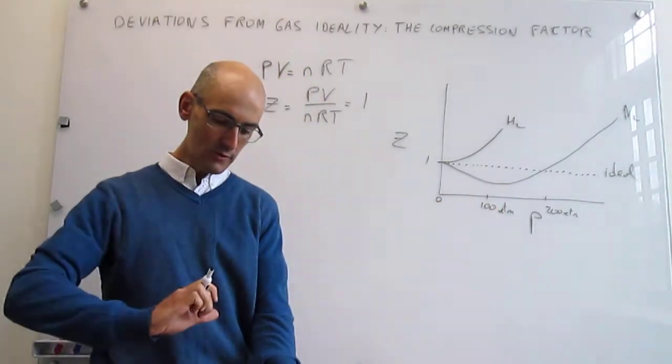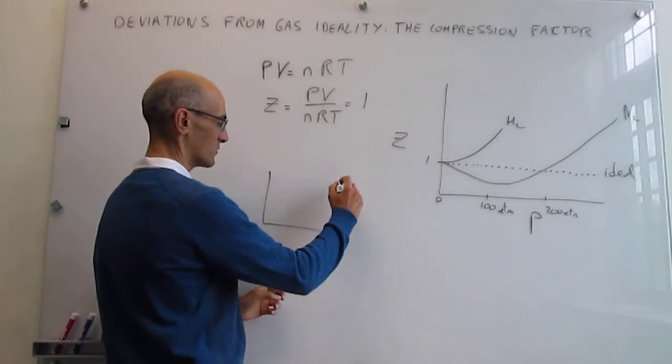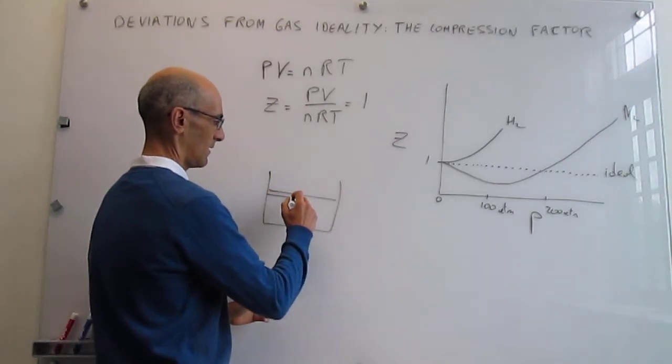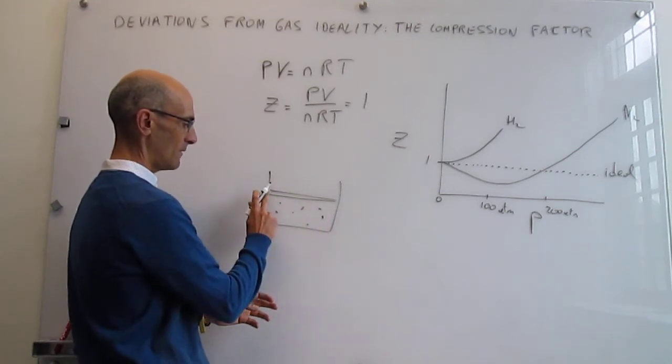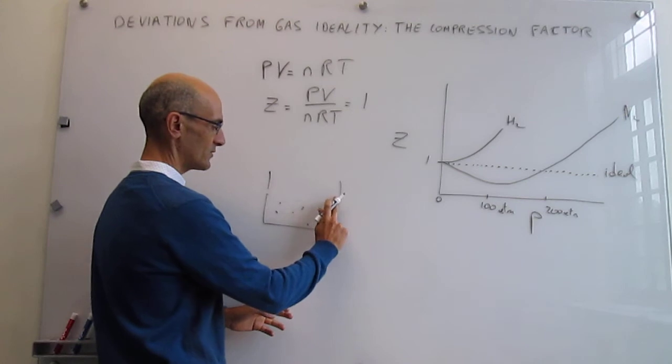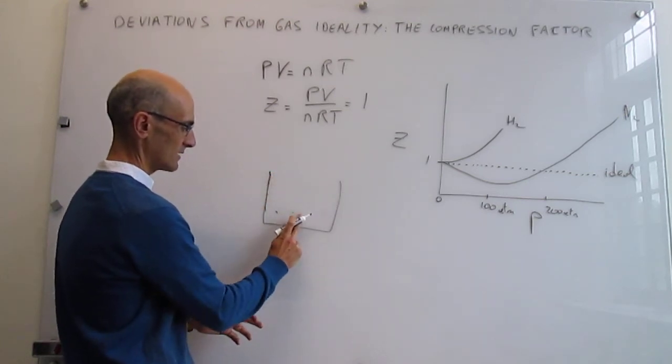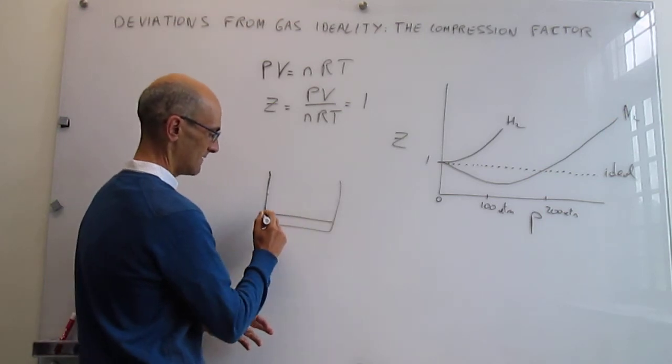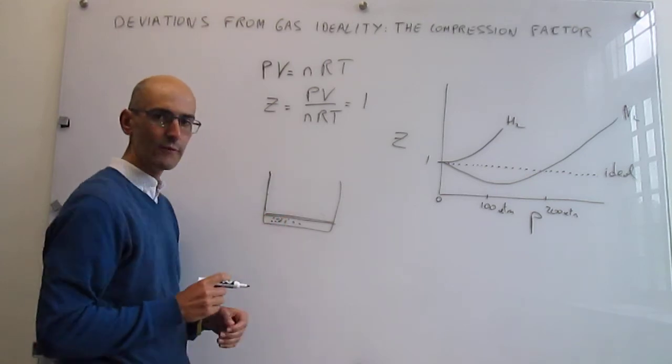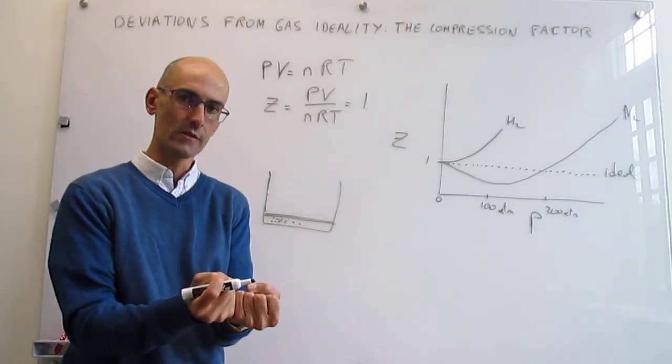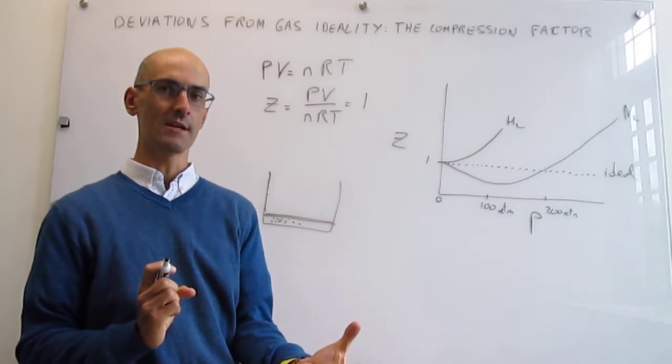But if you start to compress that gas a lot, the gas molecules are going to be very close to each other. This is the initial situation with gas molecules spread out, but when you apply a lot of pressure and reduce the volume tremendously, all those gas molecules are jammed in a very small region of space. When they get sufficiently close to each other, repulsions start to take over.